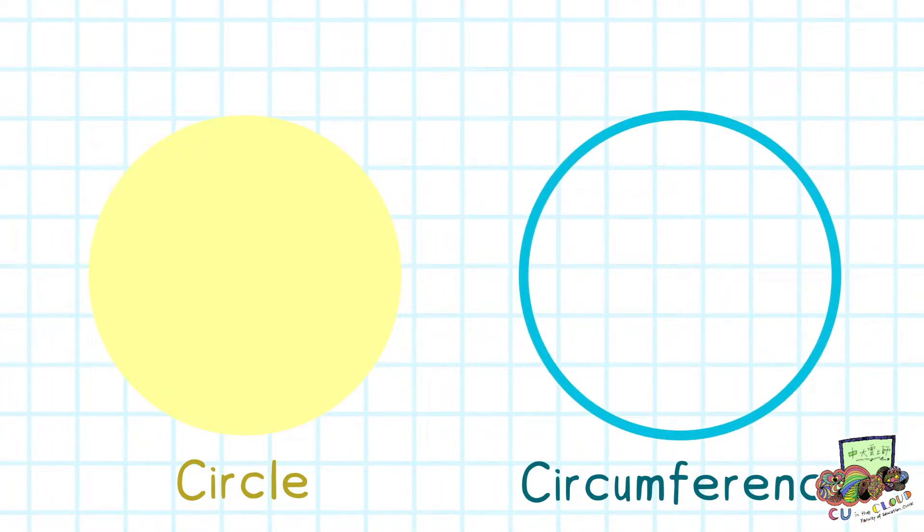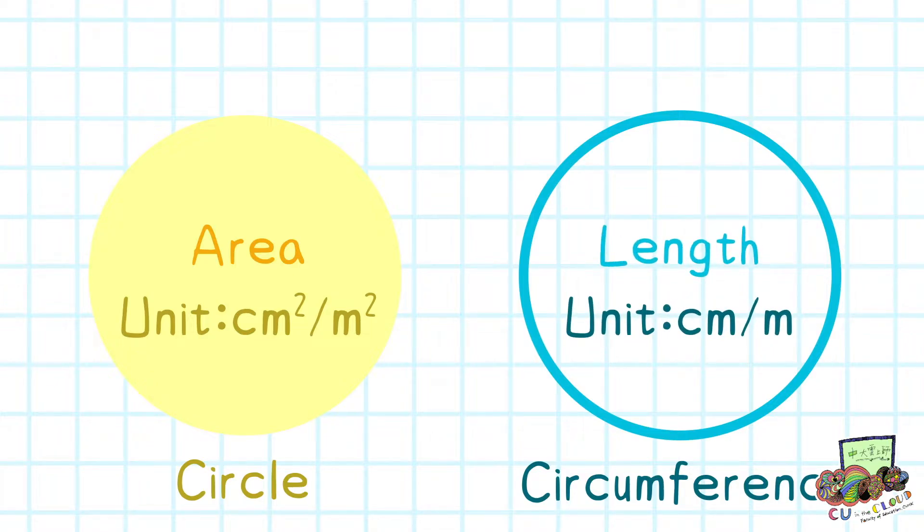Therefore, we measure the area of a circle by square meter or square centimeter, and the length of circumference by centimeters and meters.